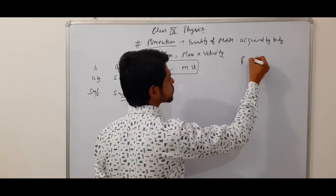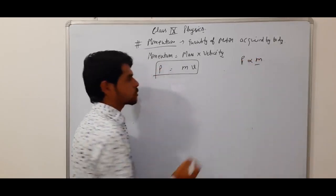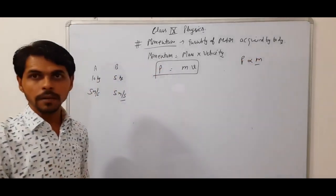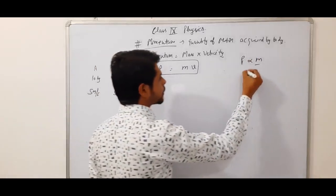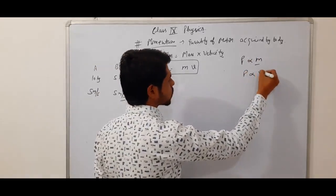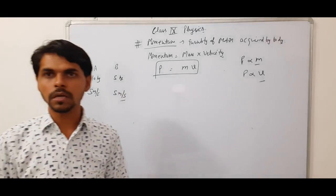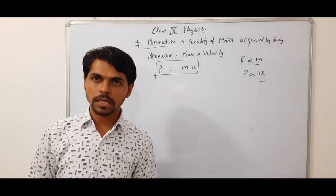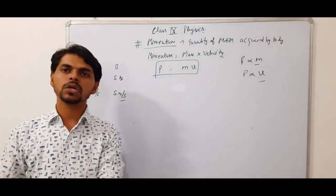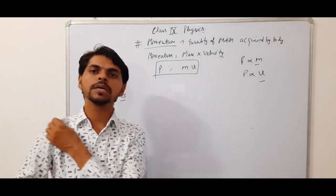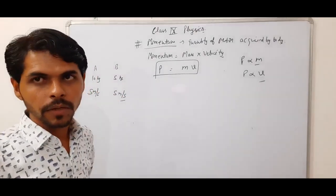Momentum depends on two terms. Momentum is directly proportional to mass — jitna body ka mass zyada hoga, uska momentum zyada. Momentum is also directly proportional to velocity — jis body ki velocity jitni zyada, uska momentum utna zyada. Mass zyada to momentum zyada, velocity zyada to bhi momentum zyada.